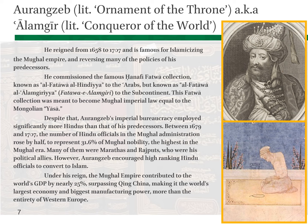Under his reign, the Mughal Empire contributed nearly 25 percent of the world's GDP, surpassing the Qing dynasty of China — it was the world's largest economy and biggest manufacturing power, more than the entirety of Western Europe. The Ottoman, Safavid, and Mughal dynasties made up the majority of the world's economy — they were not just the biggest imperial powers in the medieval world, but also controlled the world economy. The Europeans knew they weren't going to dominate the Islamic world through military force, so they used economic sabotage to bring about the fall of these empires.